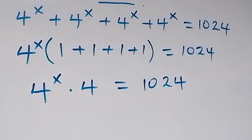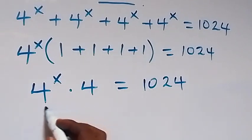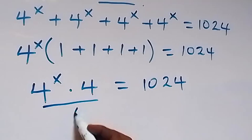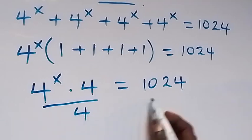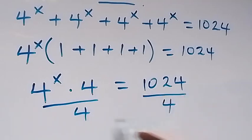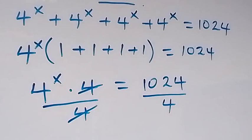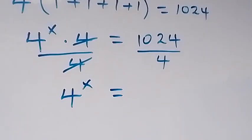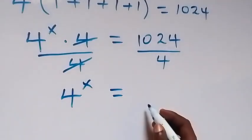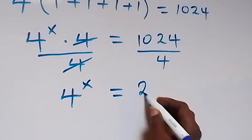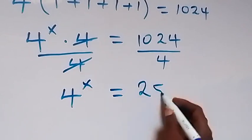Then from here we can divide both sides by 4. The 4 cancels out here and we are left with 4 raised to the power x, which is equal to 1024 divided by 4, which gives us 256.